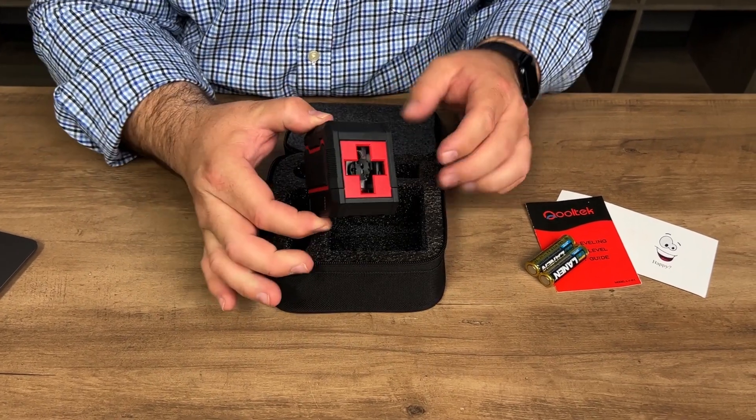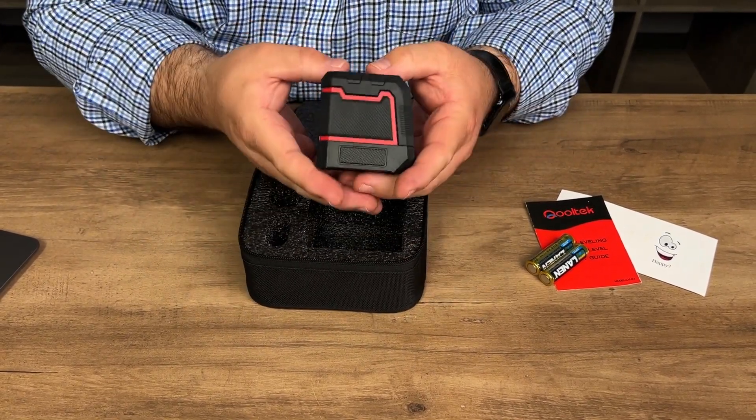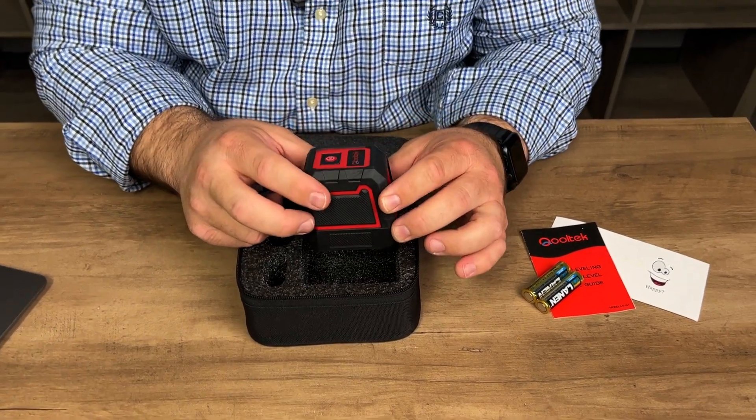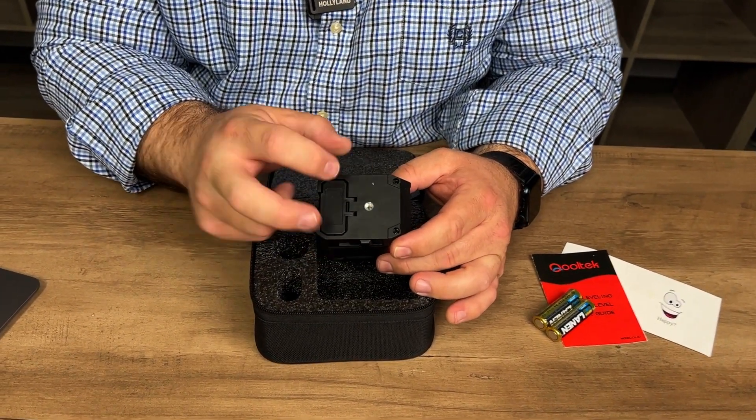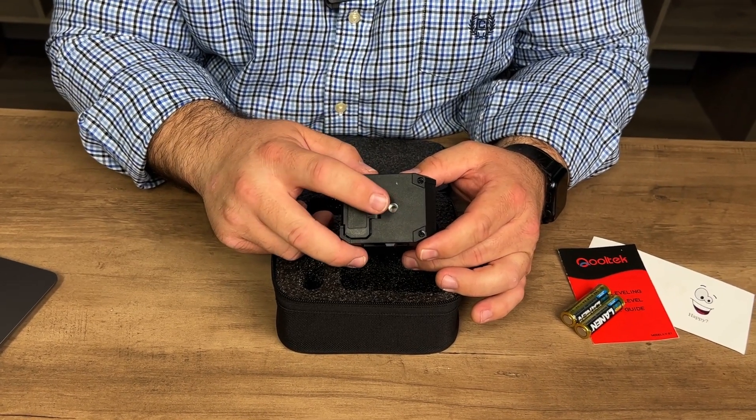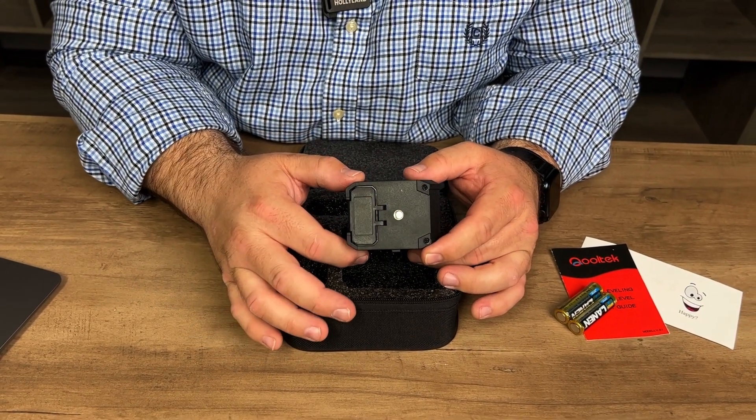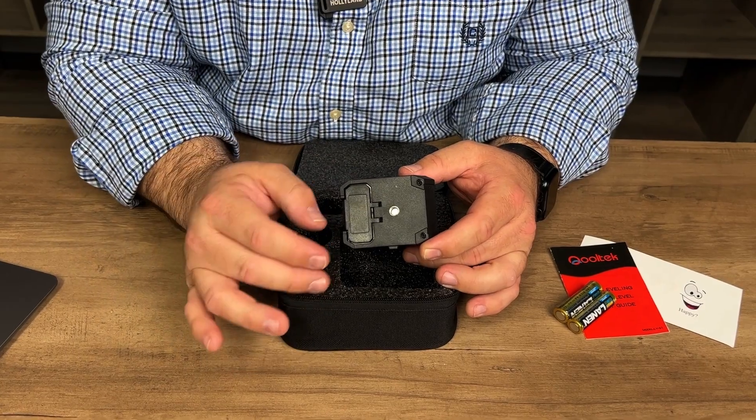But here in this compartment is the actual laser. You can see it's actually pretty small, easy to pack around and carry with you. And if you look at the bottom of it, it does have a quarter-20 thread insert here on the bottom. So you could hook this to a standard tripod or something.